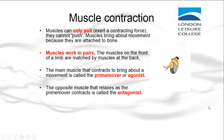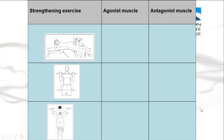Have a look at these diagrams and work out which is the main muscle that's working and what's the muscle that's opposite. The first diagram is a lying leg curl, and the second diagram is a bicep curl.